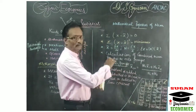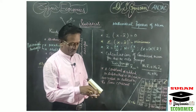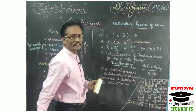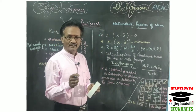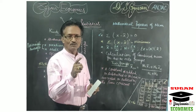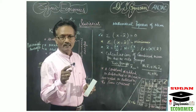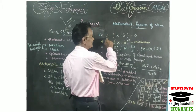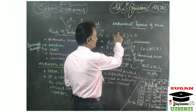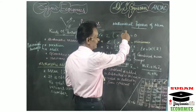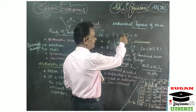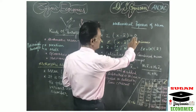Now I will explain the five mathematical properties of arithmetic mean. Property 1: the sum of the deviations taken from the arithmetic mean is always equal to zero. We have x values, we calculate the arithmetic mean for the given x series, we take the deviation of each value from that arithmetic mean, and the sum of those deviations equals zero.